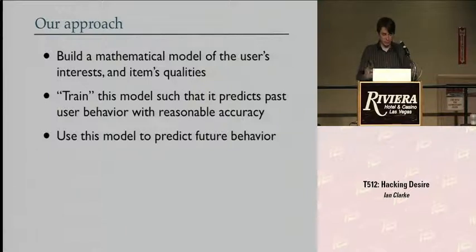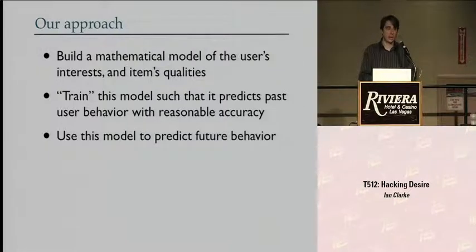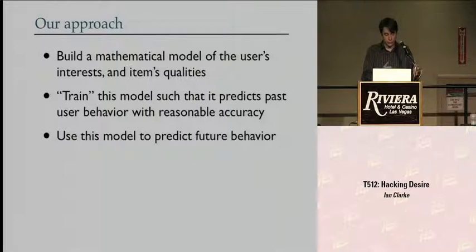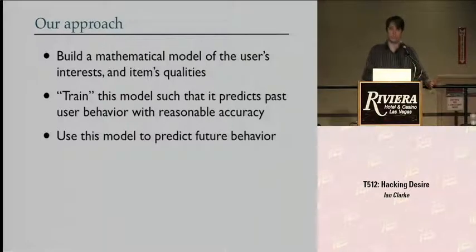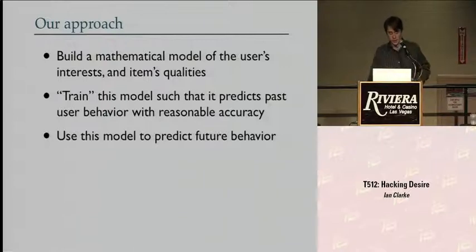These models start out essentially random, but you take past data — user A liked item B this much — and feed it into the model, making tiny tweaks so it produces the appropriate output on the training data. This technique is called gradient descent. We then use this model, which hopefully gives fairly good predictions on the training set, to produce predictions of how much a given user will like a given thing they haven't seen yet.